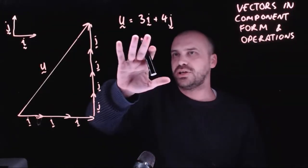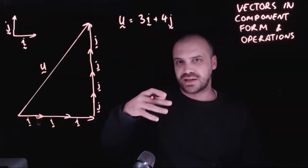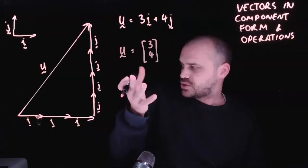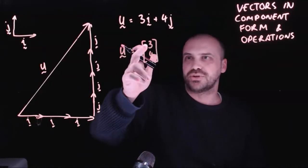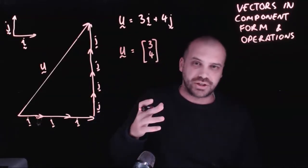Not only can we express it as three i plus four j, but sometimes it's easier to express that as a column vector. So we could say that vector u is equal to three, four, and we understand that to be three in the i direction and four in the j direction.